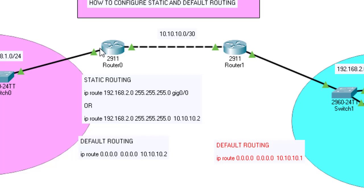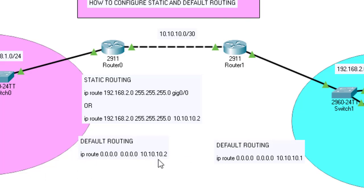Static routing specifies the particular network you want the router to be aware of, and the interface or IP address through which that packet should be forwarded. But for default routing, it's simple: any network, any address, should be forwarded to a single router. In static routing you specify 'this network goes here, this network goes there,' but in default routing, all networks go through a single next hop.